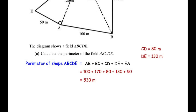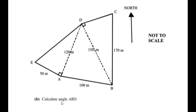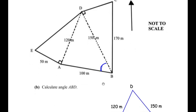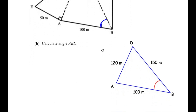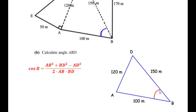Now let us move on to sub-question B: calculate angle ABD. We are going to separate out triangle ABD and redraw it. The lengths of all three sides are given. Since all three sides are known and an angle is asked, we can use the cosine rule. So: cos of angle B equals AB squared plus BD squared minus AD squared, divided by 2 times AB times BD.